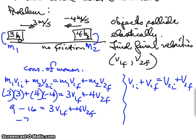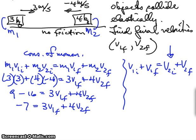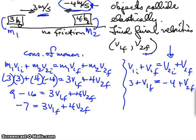We get minus 7 equals 3 V1 final plus 4 V2 final. We can no longer do anything else with that. We're stuck. That's about as far as we can go because we have two unknowns. But now we go to our velocity relationship. V1 initial is 3 meters per second, V2 initial is minus 4 meters per second.